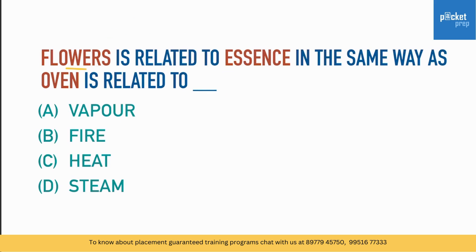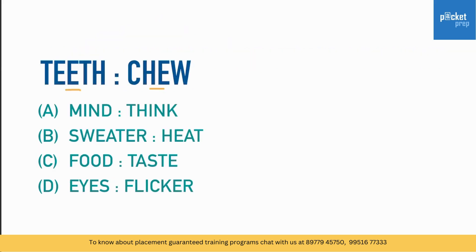Flowers is related to Essence in the same way as Oven is related to what? The relation is: flowers give essence. Now what does an oven give — vapors, fire, heat, or steam? Of course it is heat.